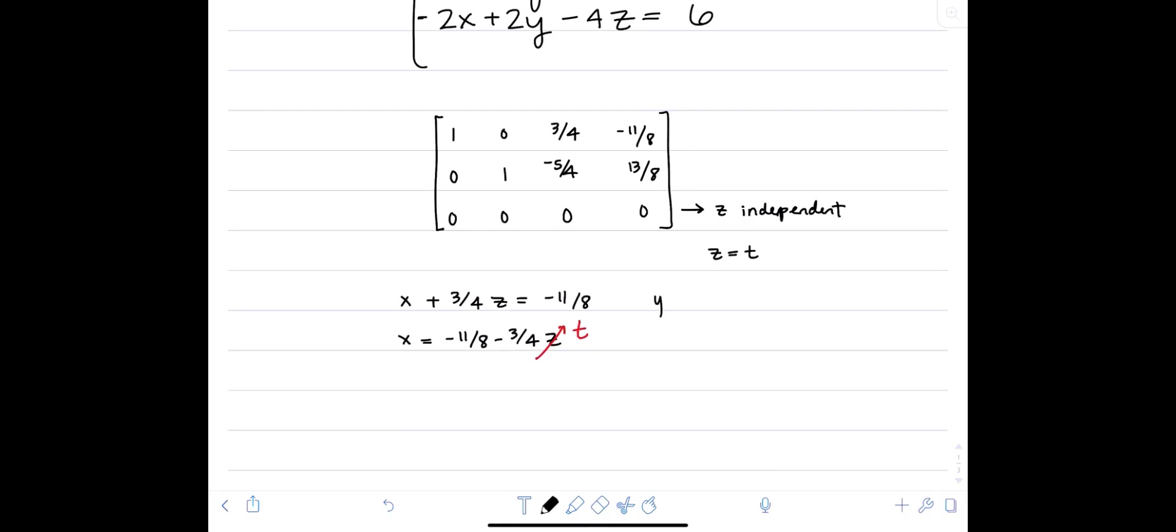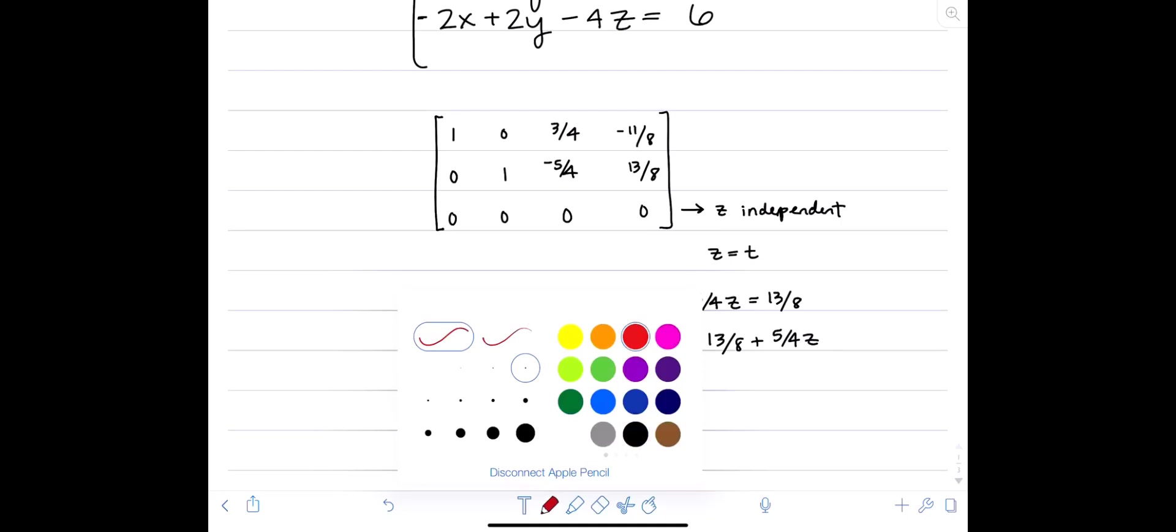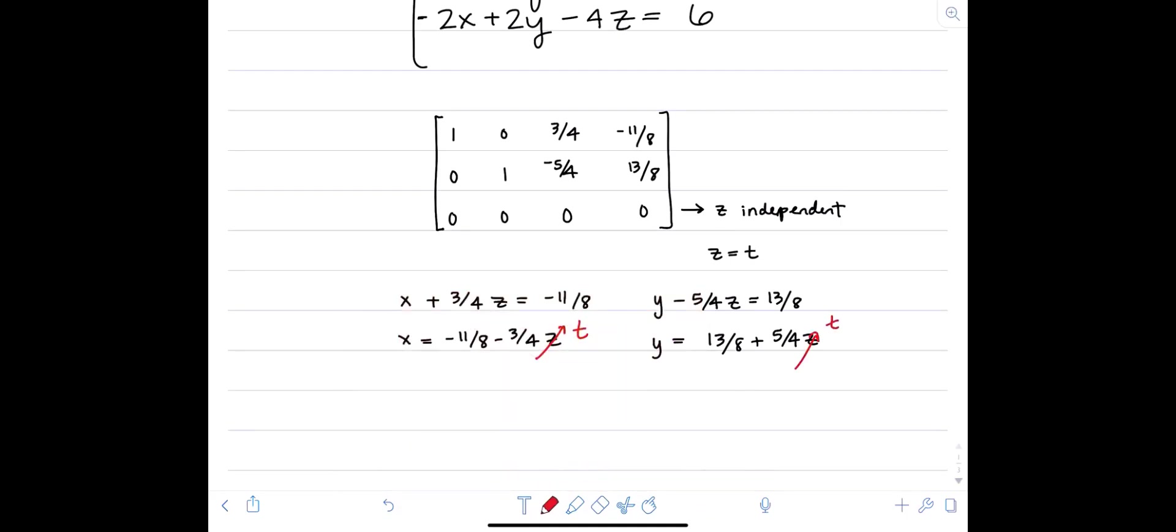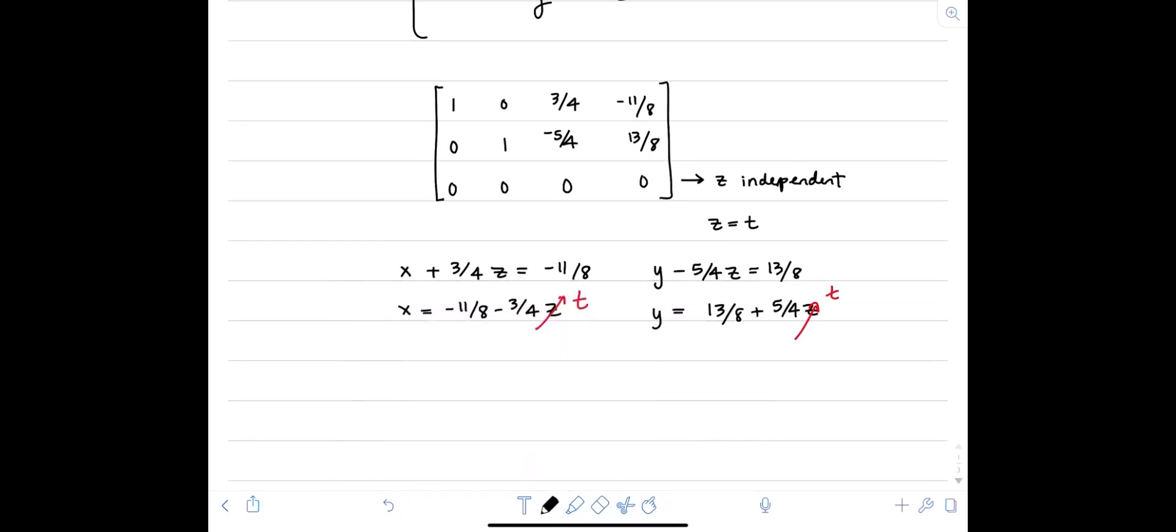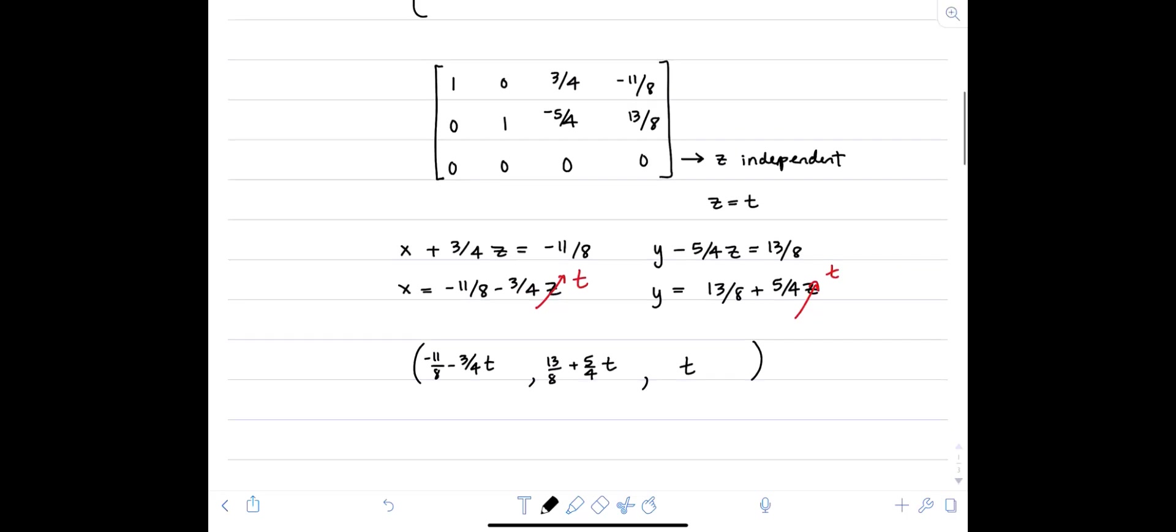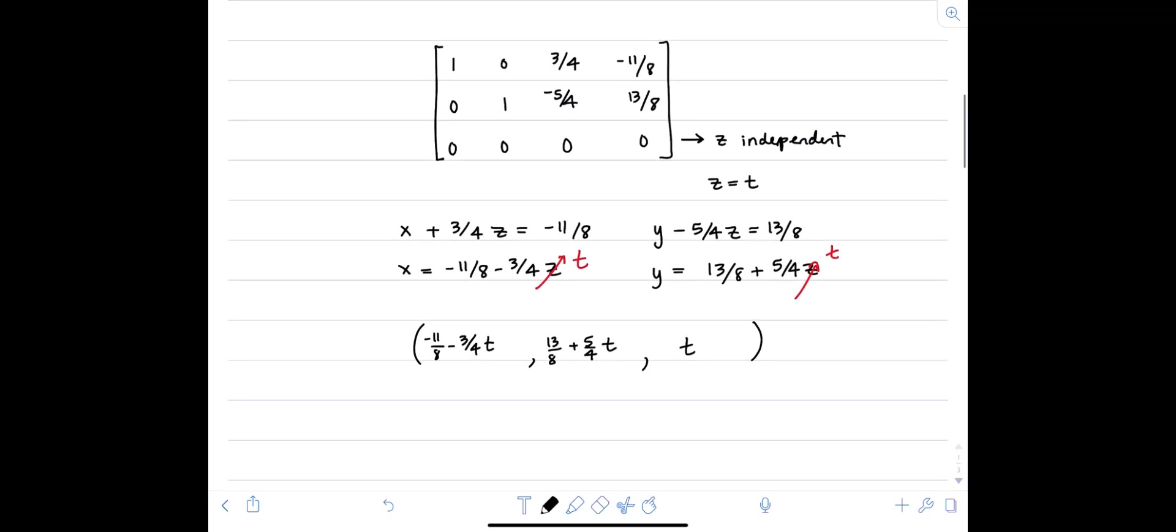Repeating this process for y, y minus 5 quarters z is 13 over 8. So that means that y equals 13 over 8 plus 5 quarters z. But z is our parameter t. And now we write our solution. This is really a whole set of infinitely many solutions that together would look like a line. And there's our solution set.